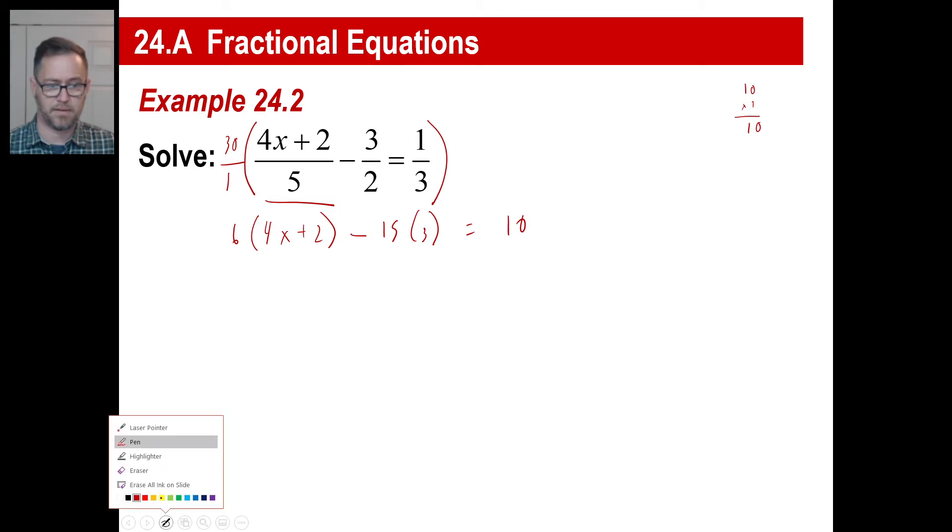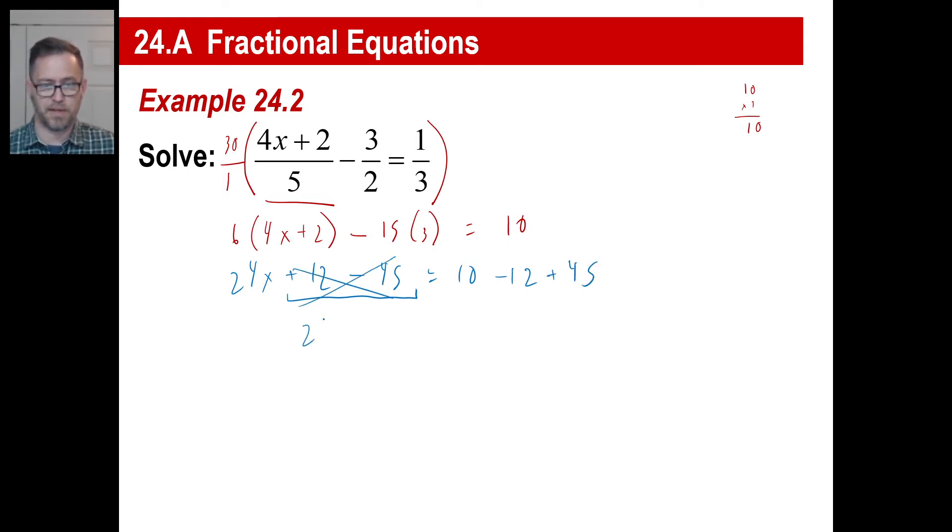Let's change this up a little bit. Six times 4X is 24X. Six times two, negative 15 times three, and there's a 10. So this here goes over. So I got a minus 12. I got a plus 45. So 24X equals 10 minus 12 is negative two. Negative two plus 45 is 43. So just divide by 24, and that gives you 43 divided by 24. Good enough. Or 1.7916. Just stick with this one.